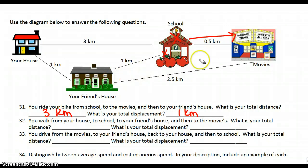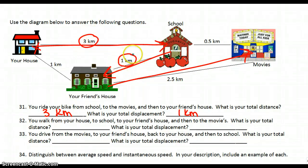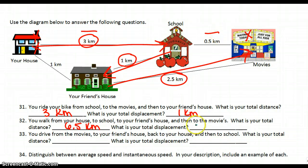Let's look at number 32. You walk from your house to school, to your friend's house, and then to the movies. What is your total distance? We went three kilometers plus one plus two and a half, which gives us 6.5 kilometers. Total displacement is how far you are from where you started. You started at your house and ended at the movies, so you went three kilometers plus another half — you are three and a half kilometers from where you started.